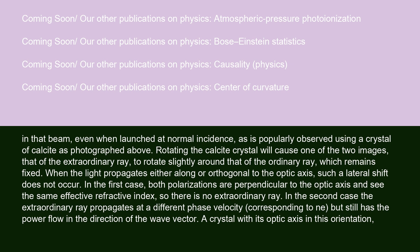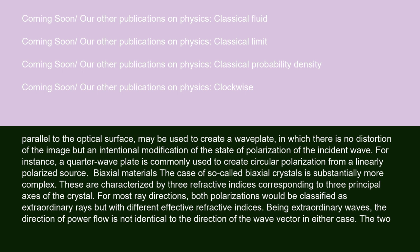In the first case, both polarizations are perpendicular to the optic axis and see the same effective refractive index, so there is no extraordinary ray. In the second case, the extraordinary ray propagates at a different phase velocity corresponding to n-e, but still has the power flow in the direction of the wave vector. A crystal with its optic axis parallel to the optical surface may be used to create a wave plate, in which there is no distortion of the image, but an intentional modification of the state of polarization of the incident wave. For instance, a quarter wave plate is commonly used to create circular polarization from a linearly polarized source.